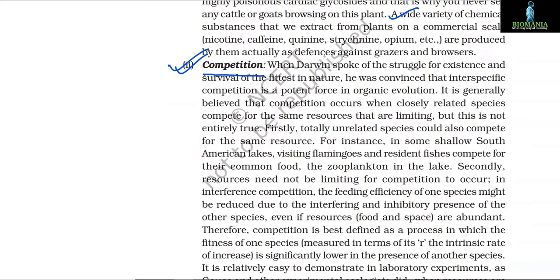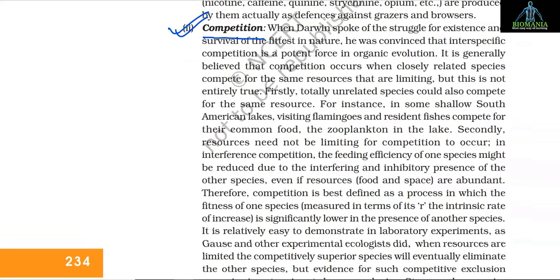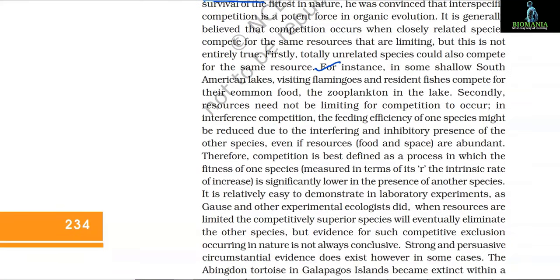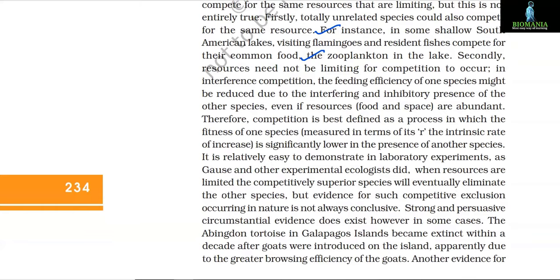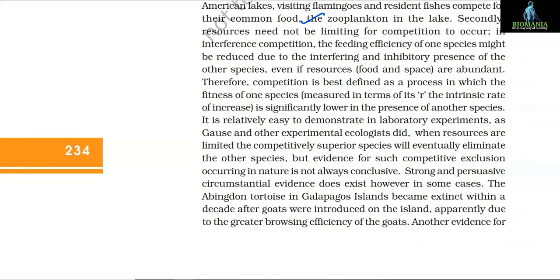Competition: when Darwin spoke of the struggle for existence and survival of the fittest in nature, he was convinced that interspecific competition is a potent force in organic evolution. It is generally believed that competition occurs when closely related species compete for the same resources that are limiting, but this is not entirely true. Totally unrelated species could also compete for the same resource — in some shallow South American lakes, visiting flamingos and resident fishes compete for their common food, the zooplankton. Resources need not be limiting for competition to occur — in interference competition, the feeding efficiency of one species might be reduced due to the inhibitory presence of the other species, even if food and space are abundant.